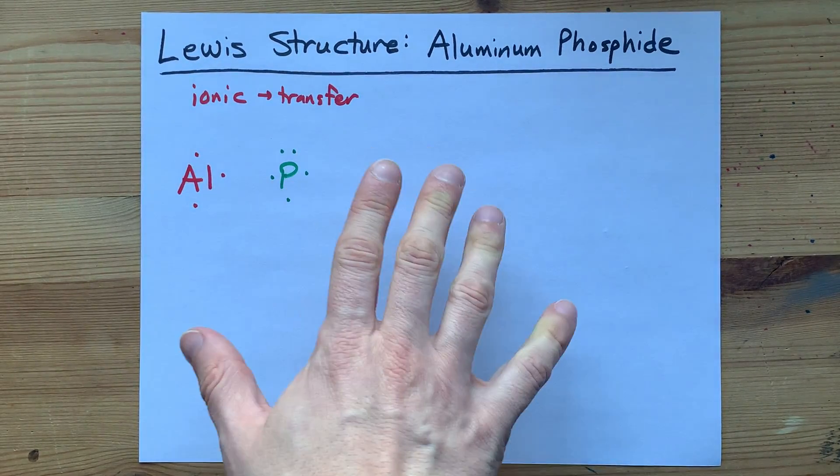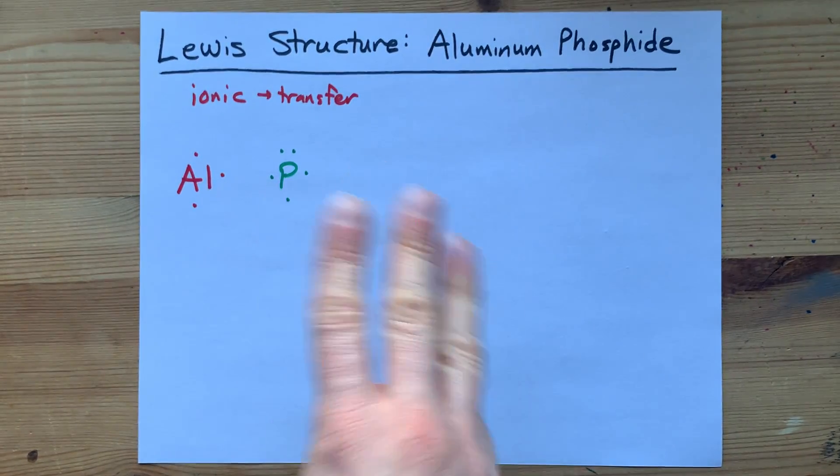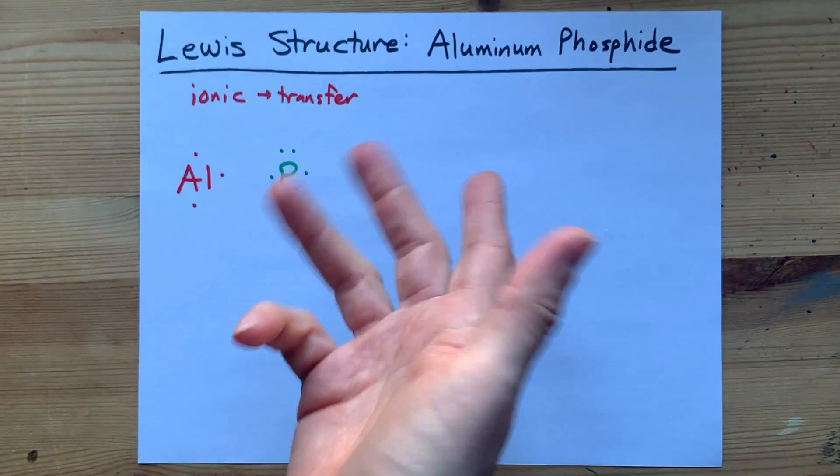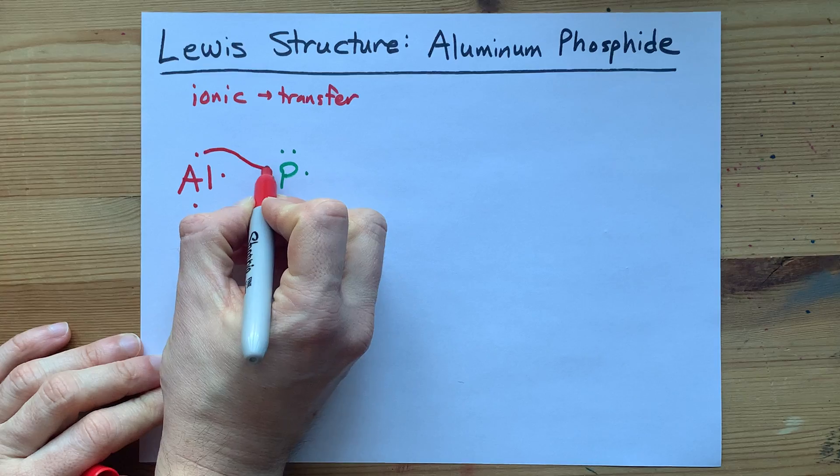Phosphorus brought five valence electrons with itself. Where can it get the extra three to become stable? This is perfect. Aluminum has three electrons that it doesn't mind giving away.